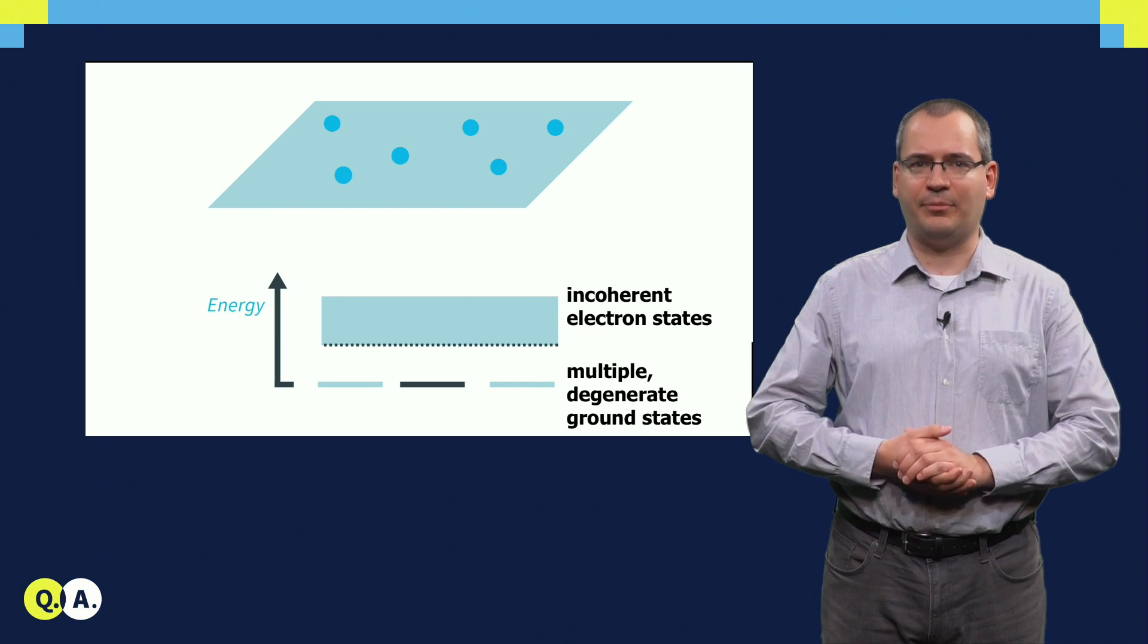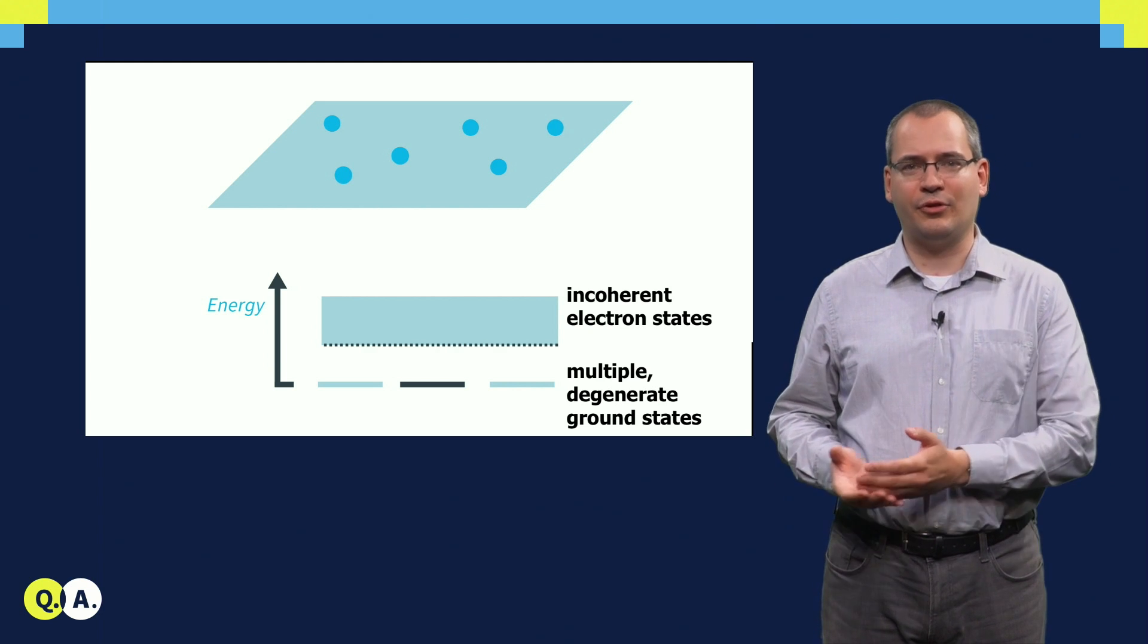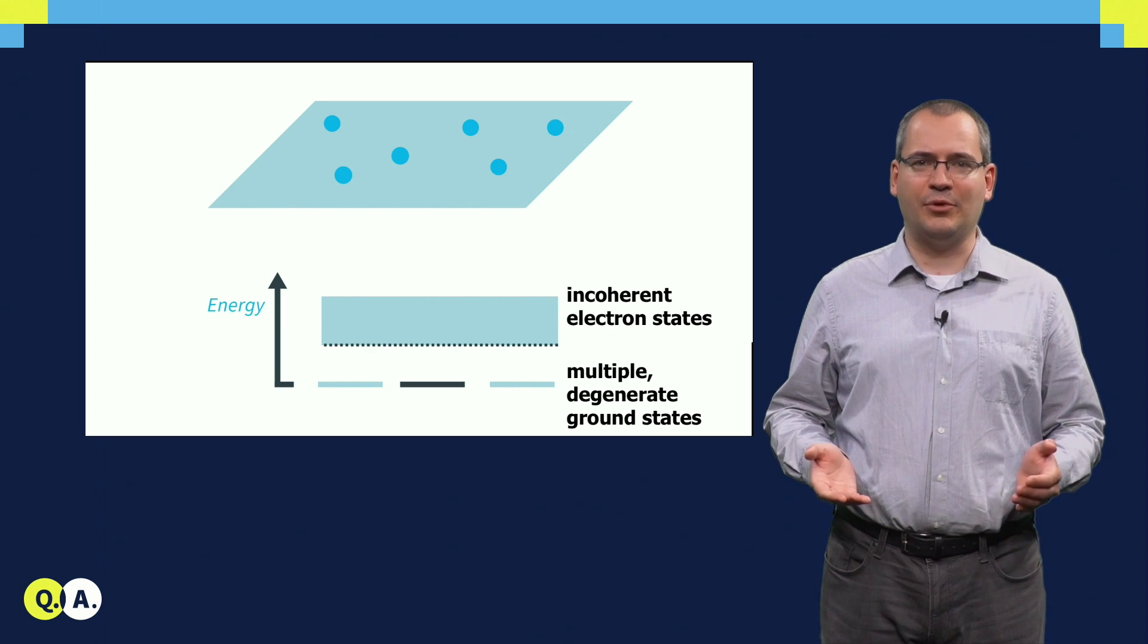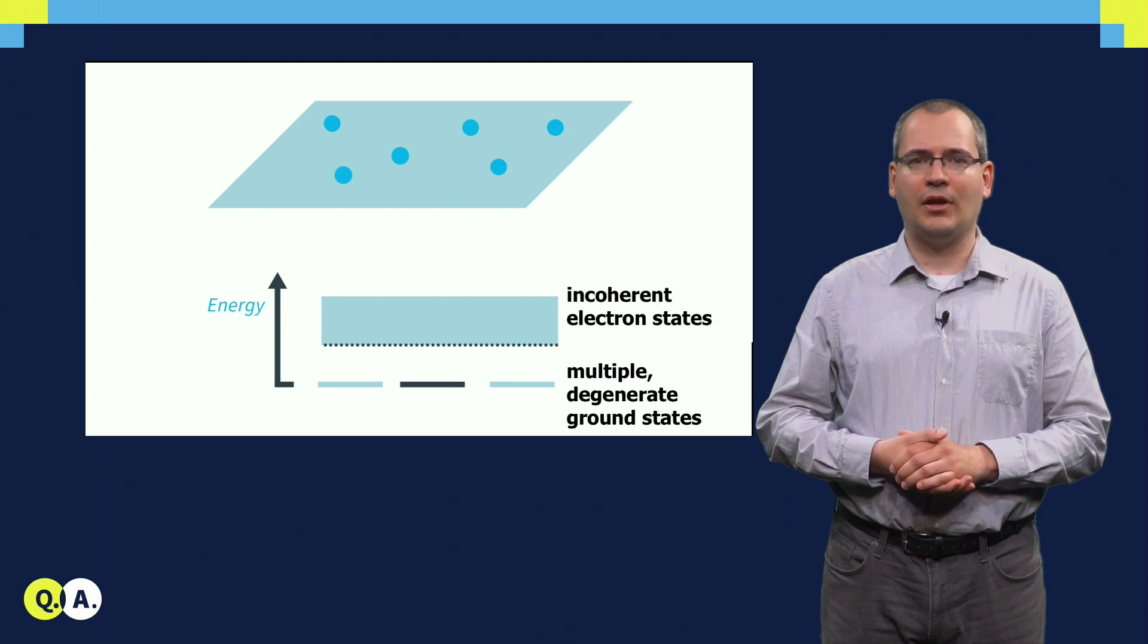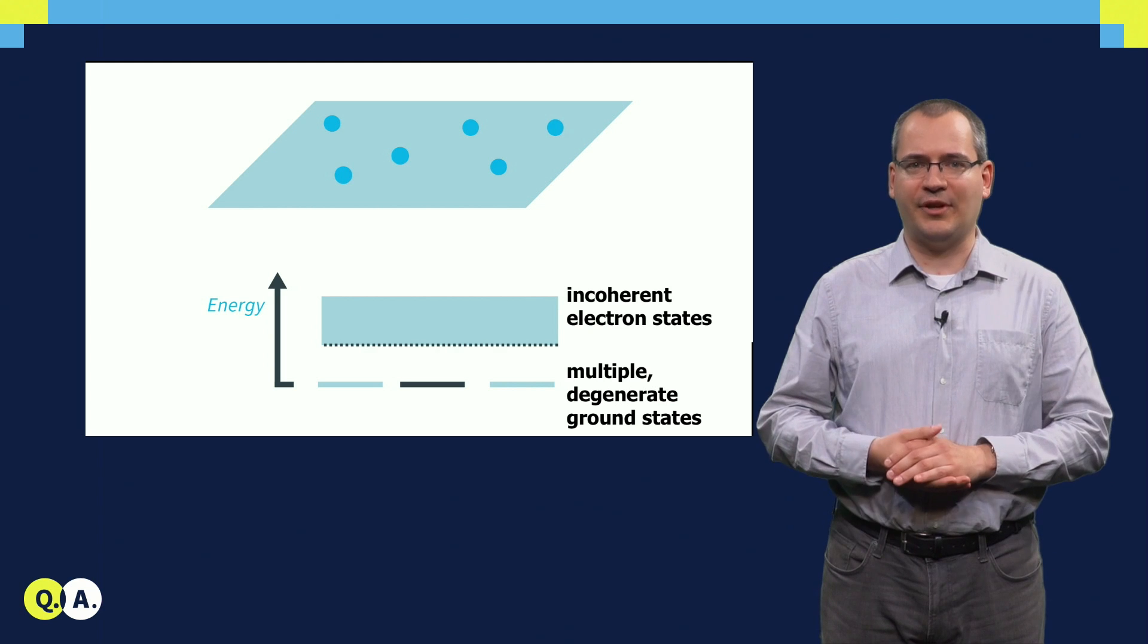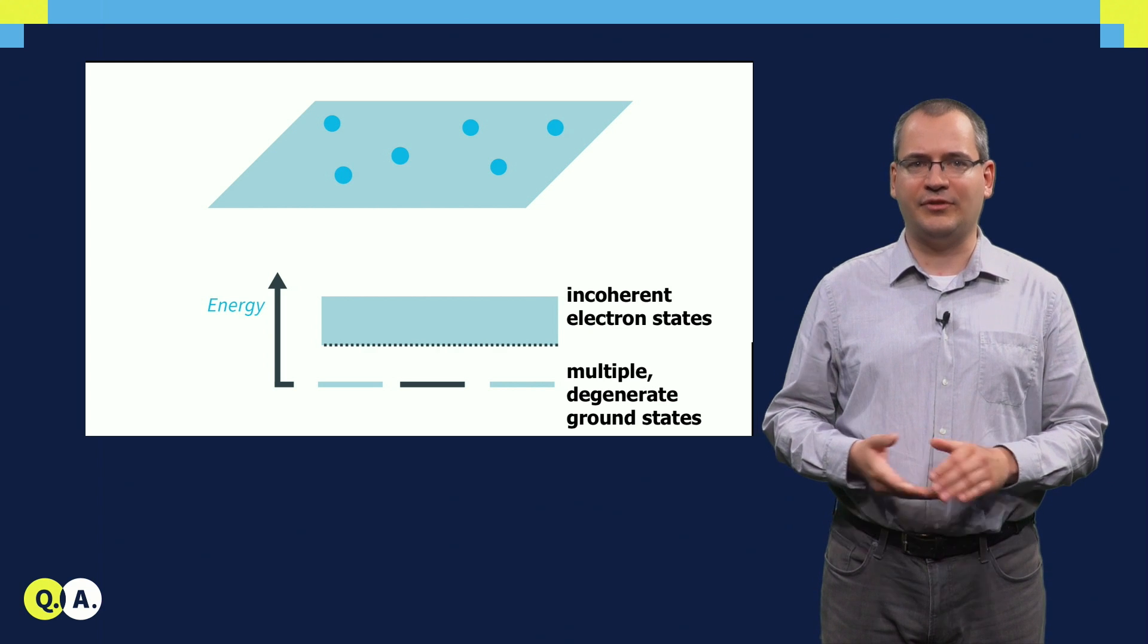If we slightly change the exchange path because of external noise or control infidelity, our quantum operation remains the same. This property is usually referred to as the topological equivalence of the exchange path.